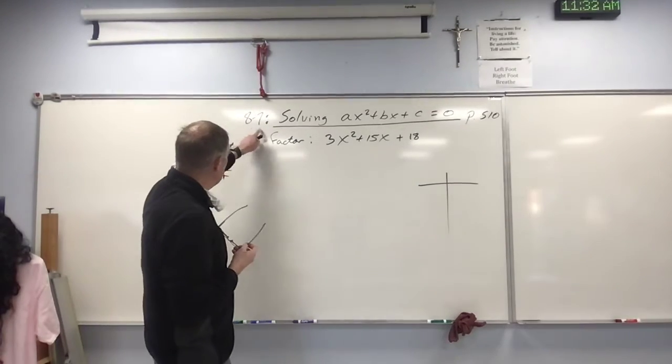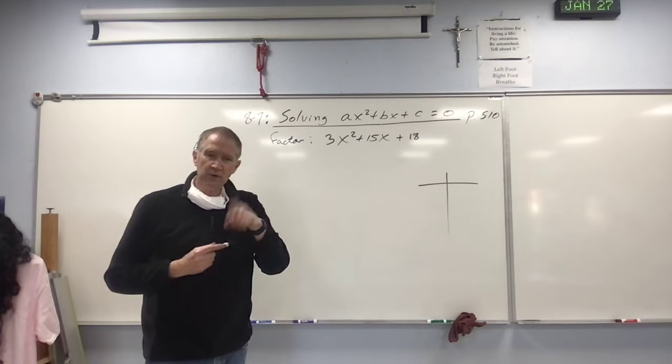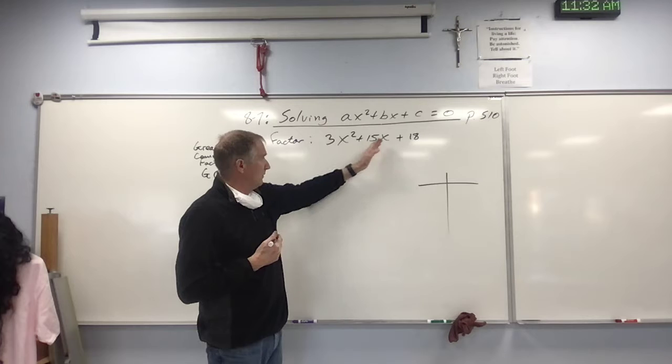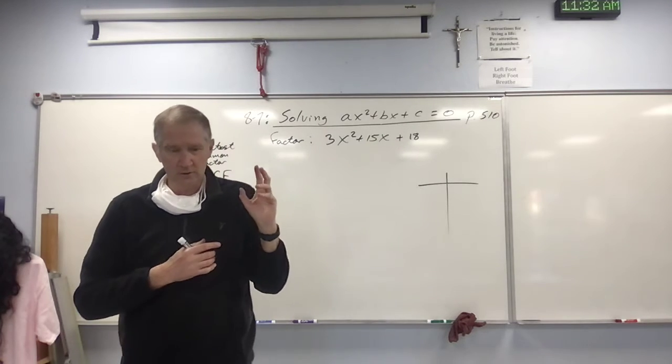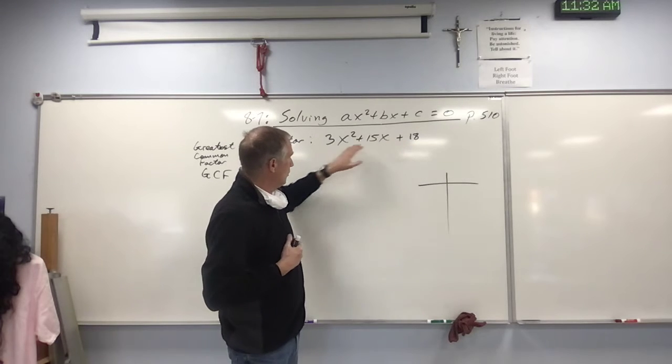Continuing on. This is actually section 8-7. I forgot to say that one of the first things you should do is see if there is a greatest common factor before you start doing all the hard stuff that we just talked about. See if there's a greatest common factor between each of these terms.